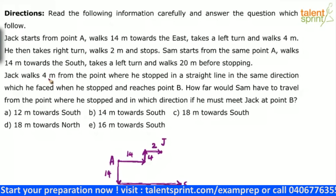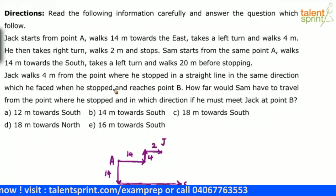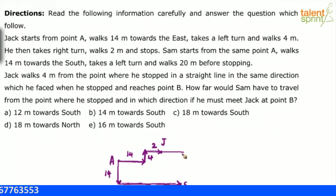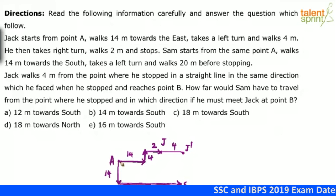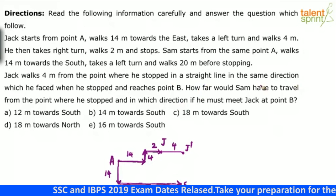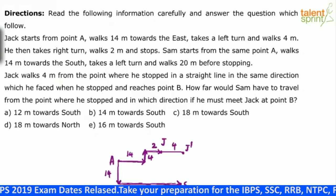Now, Jack walks 4 meters from the point where he stopped in a straight line in the same direction which he faced when he stopped. He stopped at this point, walks 4 more meters. He had already covered 14 and 2 — that's 16. Now he walks 4 more meters, so he will stop here. Jack's new position will be in line with Sam's position, because 14 plus 2 is 16, and 16 plus 4 is 20 — and Sam has also walked 20 in the horizontal direction. Jack walks 4 meters and reaches point B.